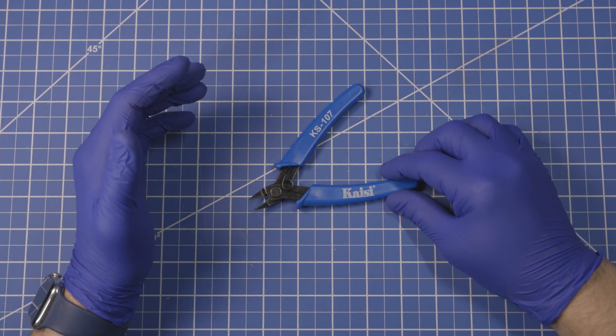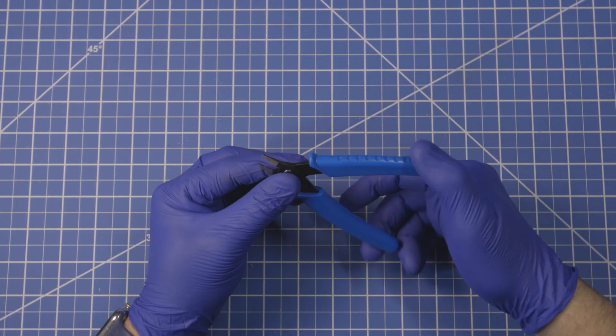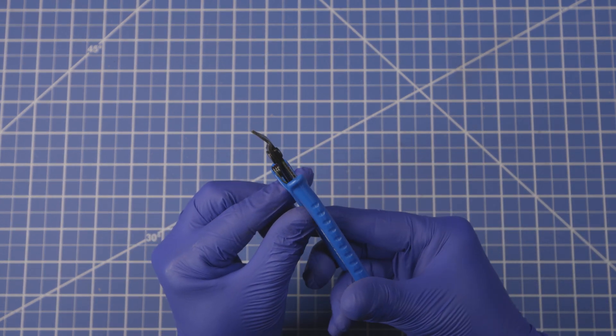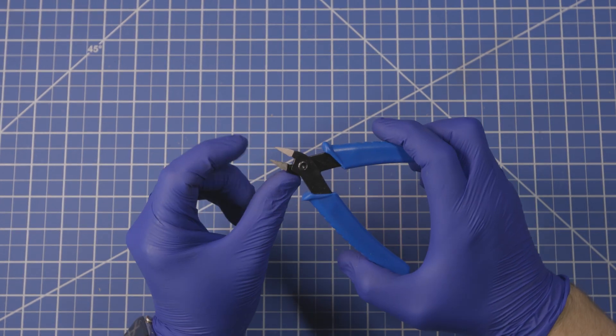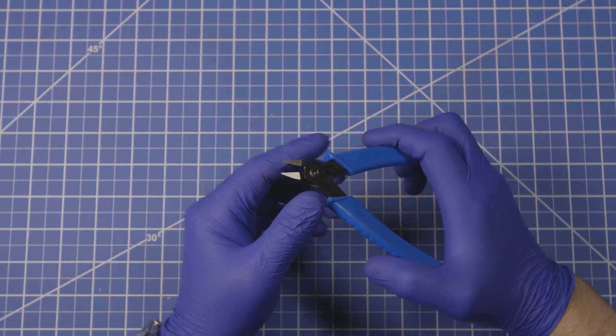What these are designed for is unlike standard wire cutters, these have a flat ground bottom, which you can see there, where the edge comes to a pretty fine point flush with that bottom.